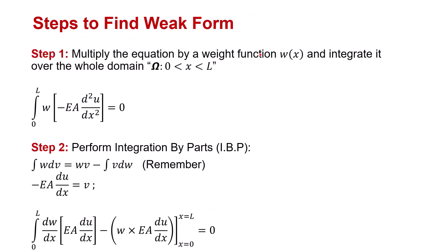Now, let's go through the steps to find the weak form for this simple problem. Step 1 is to multiply the differential equation by a weight function, which we call w(x), and integrate it over the entire domain, from x equal to 0 to x equal to L. So, we take the equation, multiply it by w(x), and integrate over the domain, omega. This gives us an integral form of the original equation.